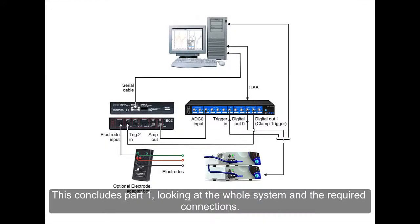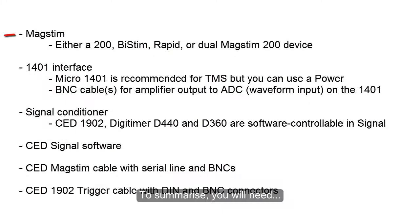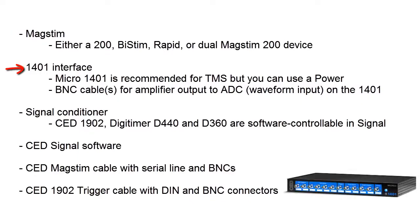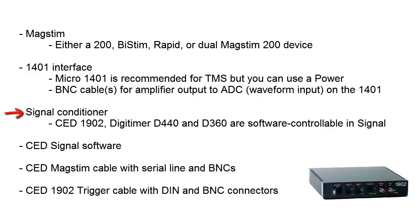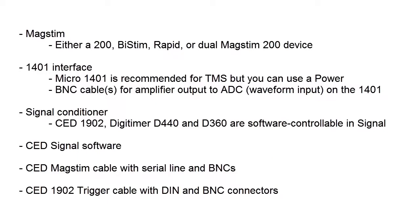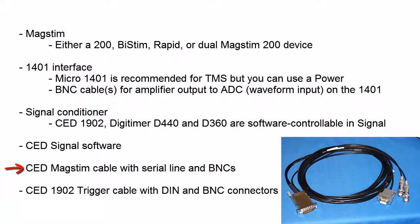This concludes part 1, looking at the whole system and the required connections. To summarise, you will need a MagStim — either a 200, BiStim or Rapid device, or dual MagStim 200 devices — a 1401 interface (the Micro 1401 is recommended for TMS, but you can use a Power 1401), BNC cables for amplifier output to ADC waveform input on the 1401, a signal conditioner (the CED1902, Digitimer D440 and D360 are software controllable in Signal), a copy of CED Signal software, and a CED MagStim cable with serial line and BNCs.